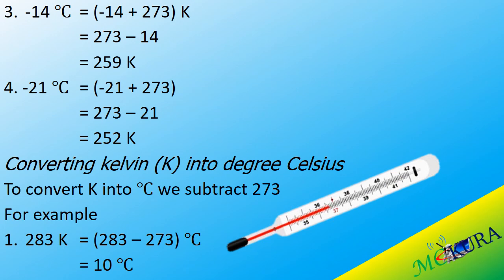What about negative degrees Celsius converted into Kelvin? We simply add that value to 273. For example, negative 14 degrees Celsius: negative 14 plus 273 is the same as subtracting 14 from 273, giving 259 Kelvin. If we have negative 21 degrees Celsius, we take negative 21 plus 273, which is the same as 273 minus 21, giving 252 Kelvin.